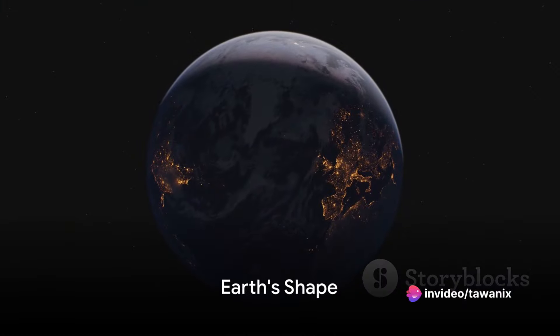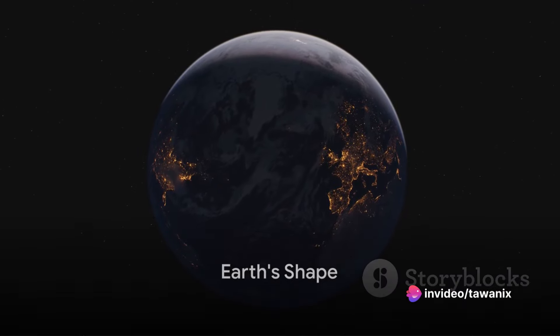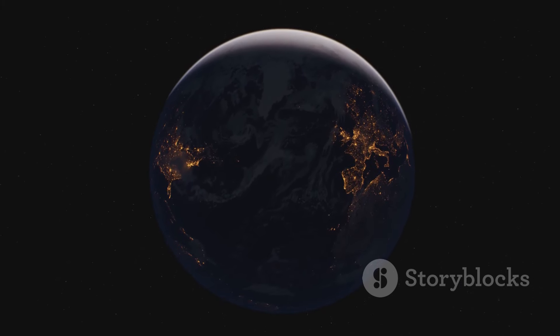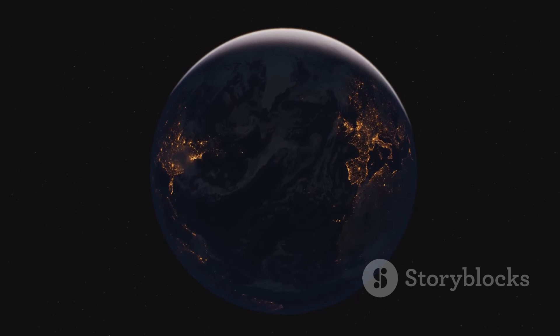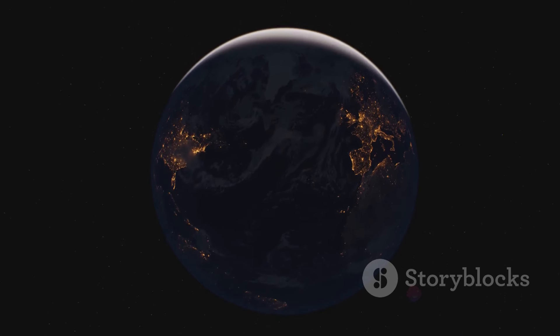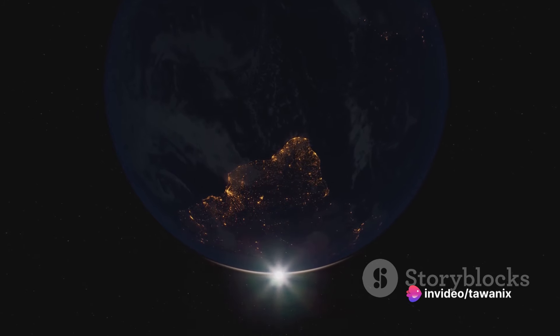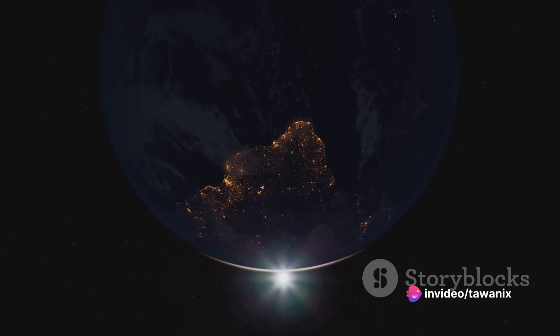But the most convincing clue is right under our feet. Earth, contrary to common belief, isn't a perfect sphere. It's got more of a cosmic pear shape, bulging at the equator and squishing at the poles. Imagine a ball of clay. Now spin that ball. What happens? The clay stretches outwards, right? That's exactly what's happening with Earth.